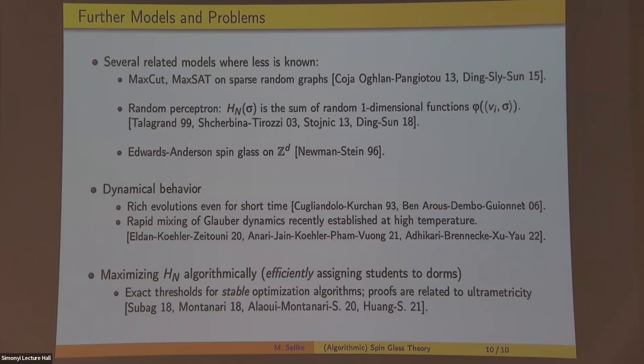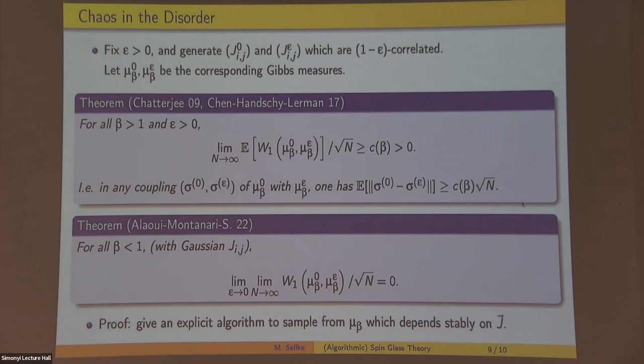What about the p-spin models? Can you do the same for them? Yeah, the algorithm thresholds for optimization, it works the same way for them. For the sampling results I mentioned, we're working on it right now, it seems that it should work for high temperature, but maybe not all the way to criticality. So basically this theorem by Chatterjee applies whenever replica symmetry is broken. So if you want your sampling algorithm to be stable, you can kind of only do anything when you have replica symmetry. I mean, that doesn't imply that other types of things won't work. Maybe Glauber dynamics can still mix in polynomial time.